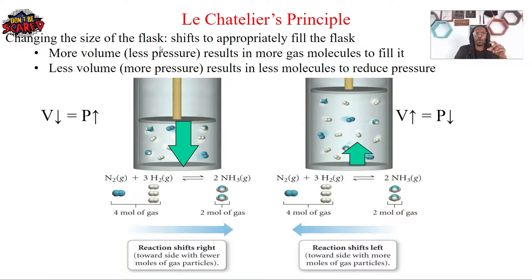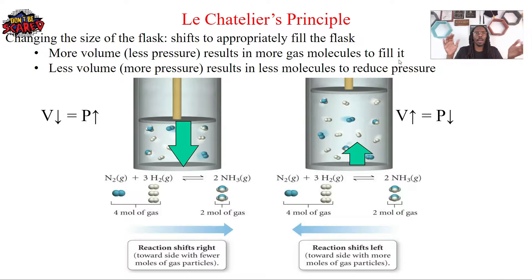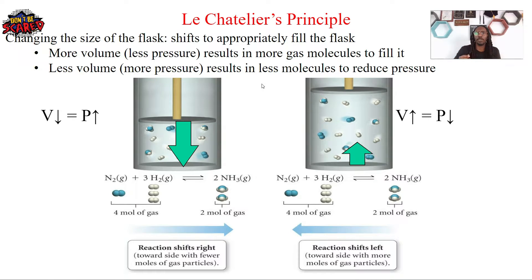The size of the flask or container will impact your gas. The more volume you have, the less pressure you need. More volume results in more gas molecules needed to fill it. If I have less volume, I need less molecules to reduce my pressure. So: volume down, pressure up; volume up, pressure down.